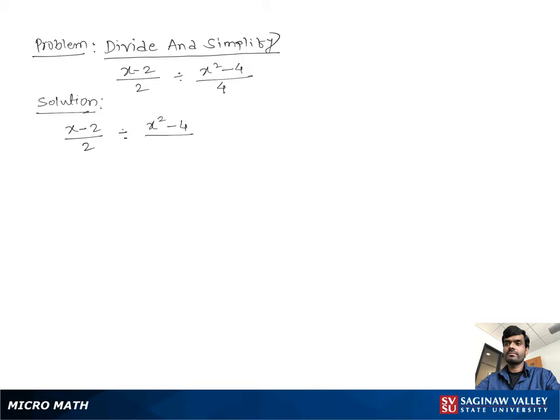Now we keep the first fraction as it is. We can write (x-2)/2, then we change the divide sign into multiply and reciprocate the second fraction. We flip the second fraction, changing numerator into denominator and denominator into numerator: 4/(x²-4).